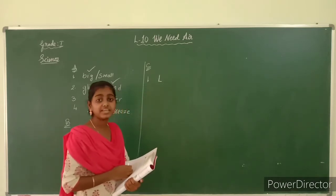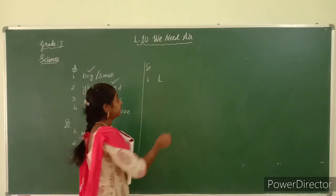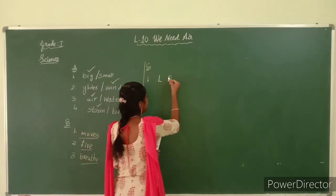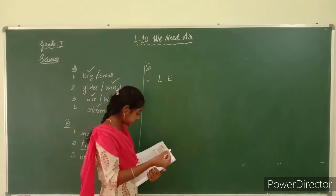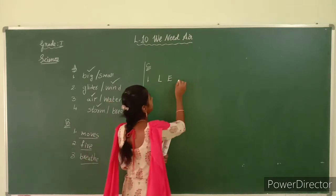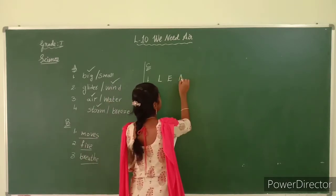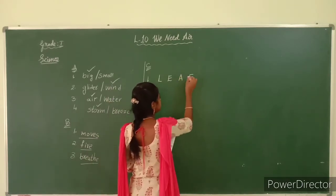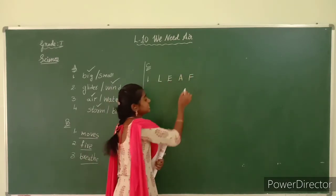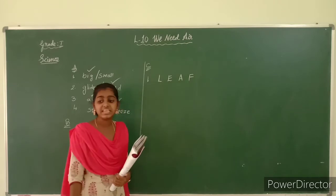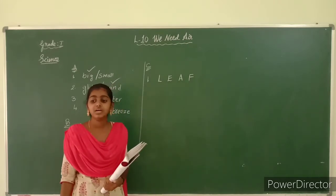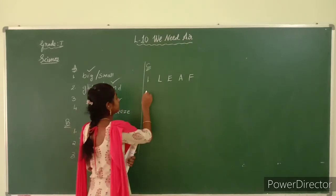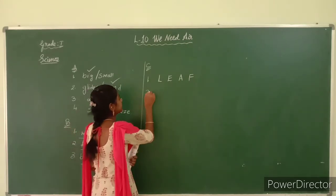Next: elephant — E for elephant. Next: A. Air of line — and F for fish. What is this? L-E-A-F. Leaf.